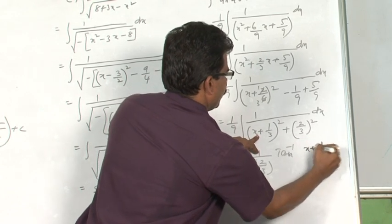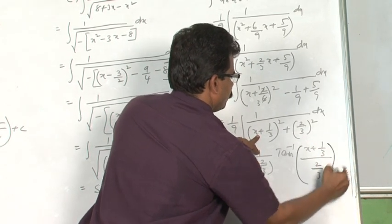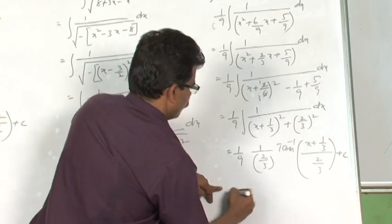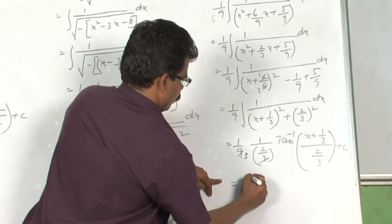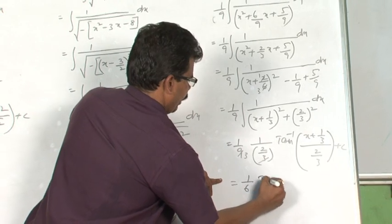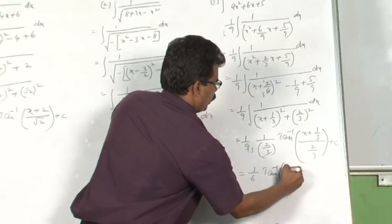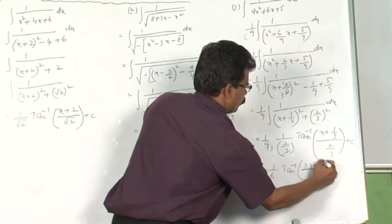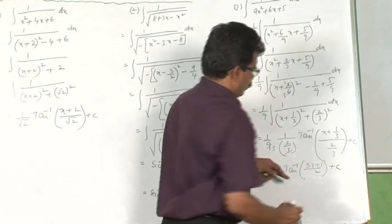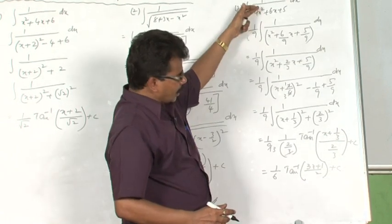Plus c. This 3 times will cancel, giving 1 by 6 tan inverse 3x plus 1 by 2 plus c, which will be the solution for the given integrand.